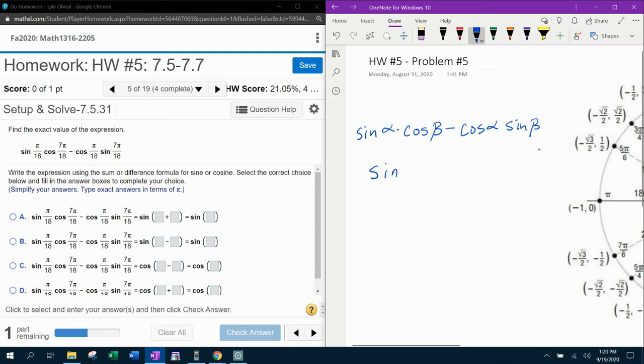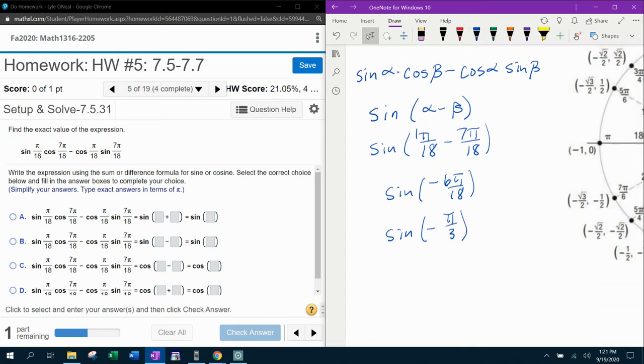So I can rewrite this expression as sine of alpha minus beta using my sum and difference formulas. And then I can substitute back in for alpha and beta what they're equal to and simplify. So pi over 18 minus 7 pi over 18, that's the same as 1 minus 7, which is negative 6 pi over 18, which will reduce 6 goes into 18 three times. And did you happen to notice that that angle is negative?